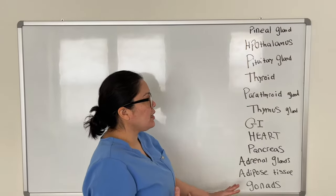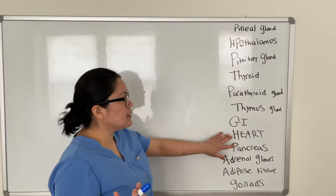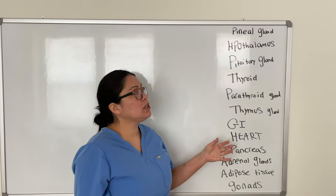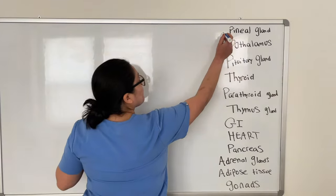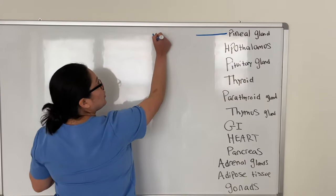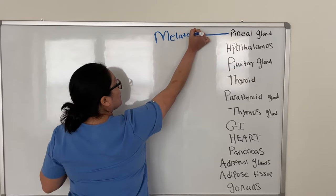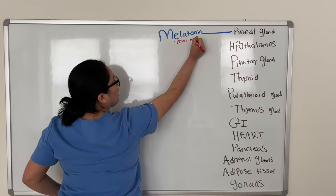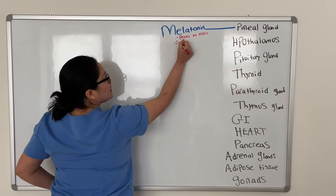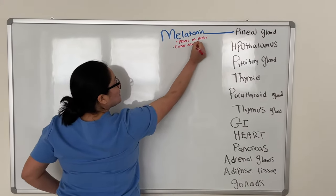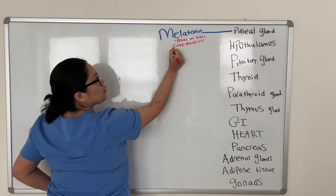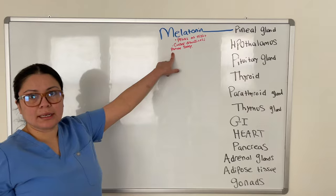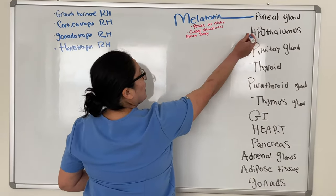First off, we have the glands and some organs like the heart and the pancreas — those aren't glands, they are organs, but they all secrete some hormones. Starting off with the pineal gland: the pineal gland releases melatonin, and melatonin peaks at night and causes drowsiness in order to promote sleep. So melatonin basically helps us sleep.